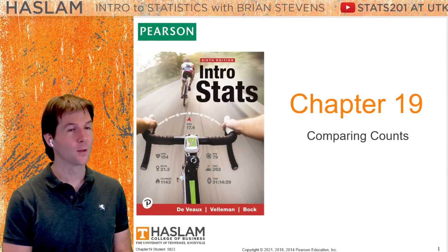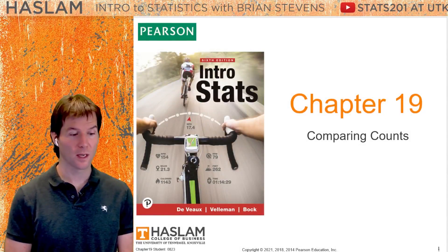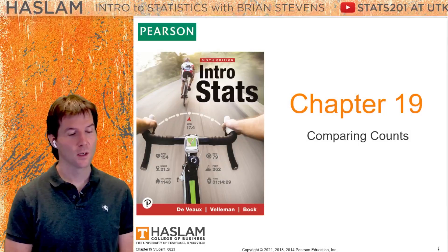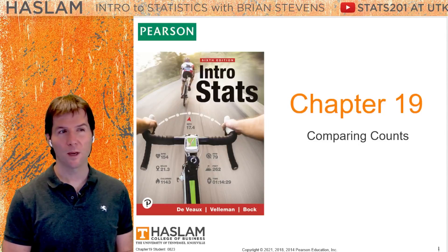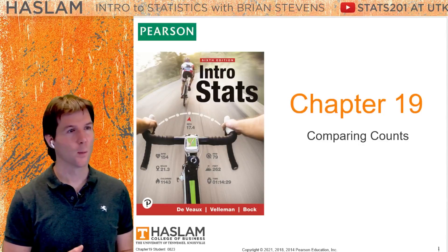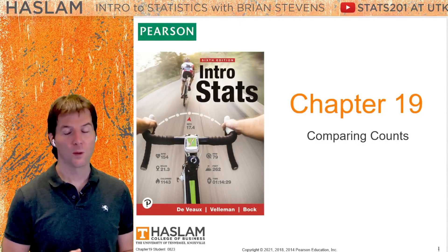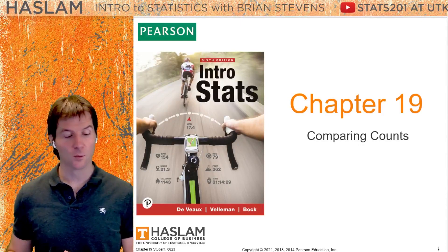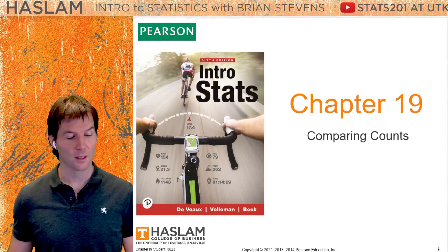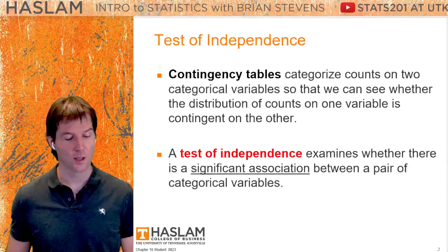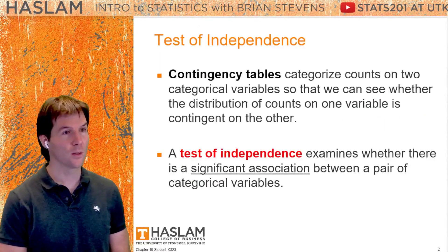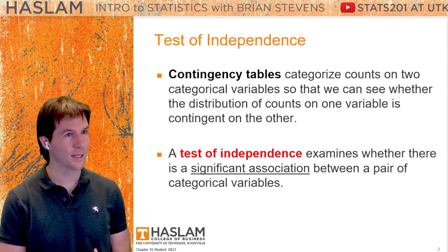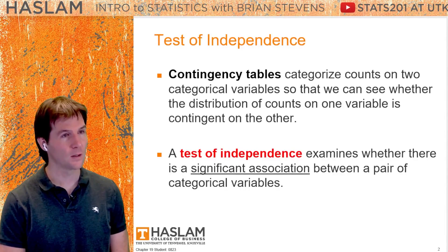The final chapter will be comparing counts. What do we mean by counts, and what are we comparing? We're comparing groups to see how often things occur using what is called the chi-squared test of independence.